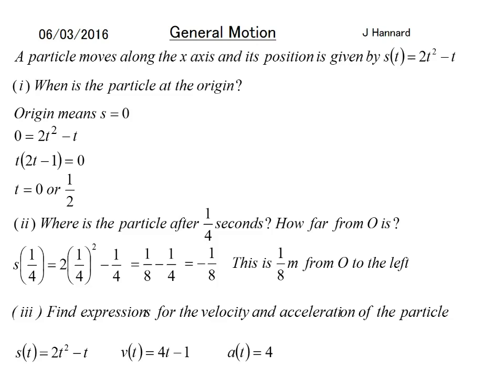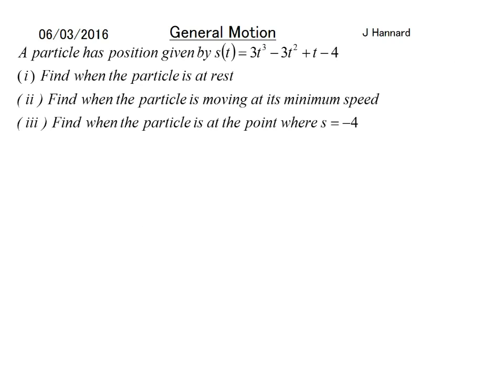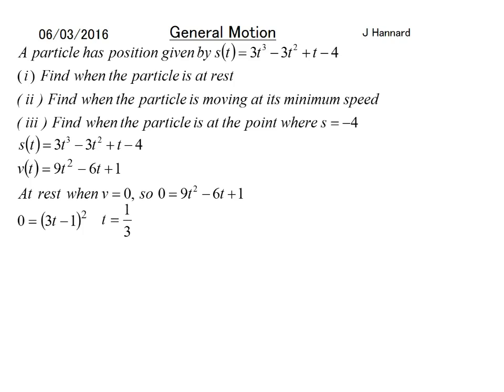Let's do another one. A particle has the position given by s(t) = 3t³ - 3t² + t - 4. Find when the particle is at rest. We need to find a velocity equation like that. I'll also find an acceleration, well I didn't in this case, but I'd usually do that. Work out your displacement equation, velocity, and acceleration just to get them out of the way. It's at rest when v = 0, so we set the velocity equation equal to zero and then solve the quadratic, which is (3t - 1)², so therefore t = 1/3.